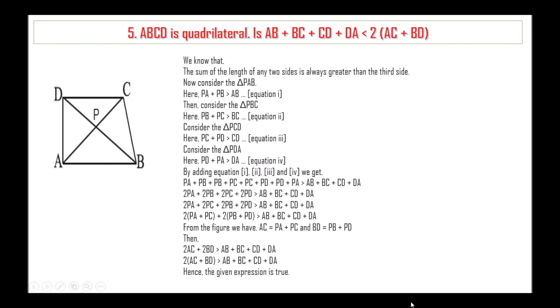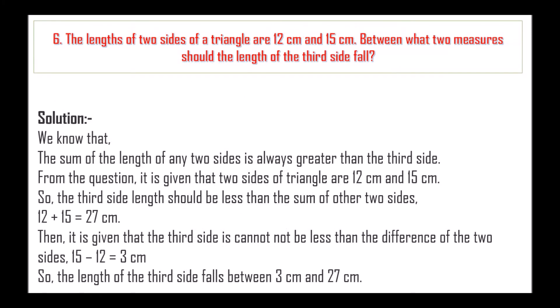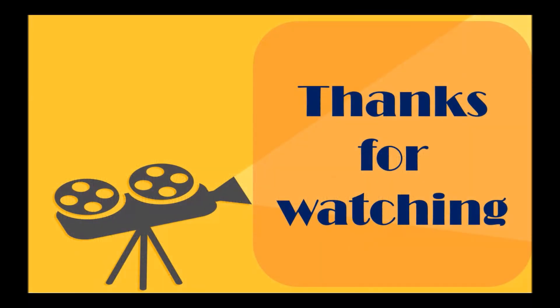Sixth question: The lengths of two sides of a triangle are 12 cm and 15 cm. Between what measures should the length of the third side fall? The third side must be less than the sum of the other two sides: 12 plus 15 equals 27 cm. The third side cannot be less than the difference of the two sides: 15 minus 12 equals 3 cm. So the length of the third side falls between 3 cm and 27 cm.